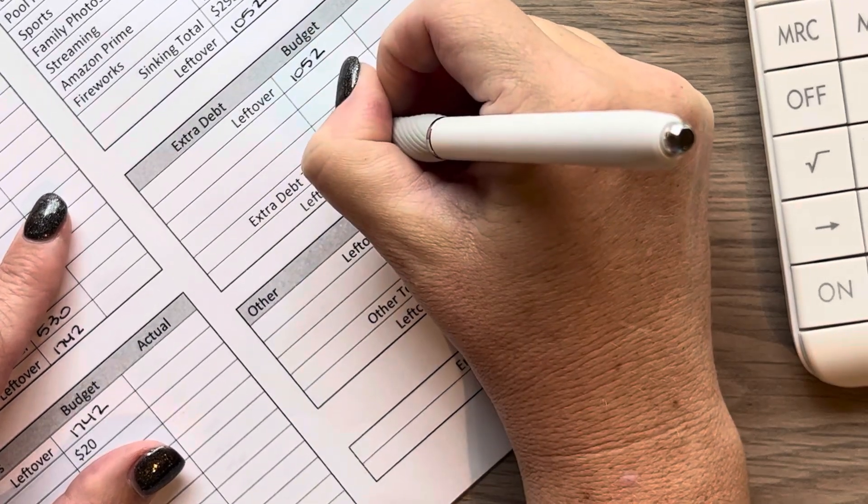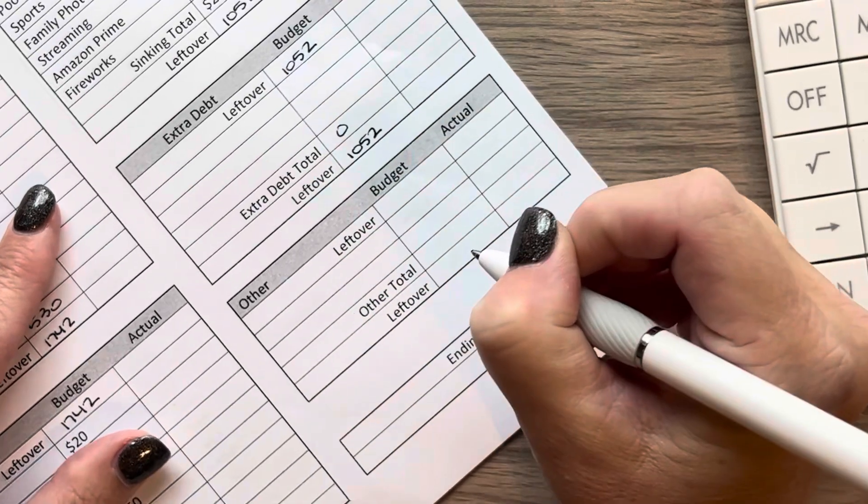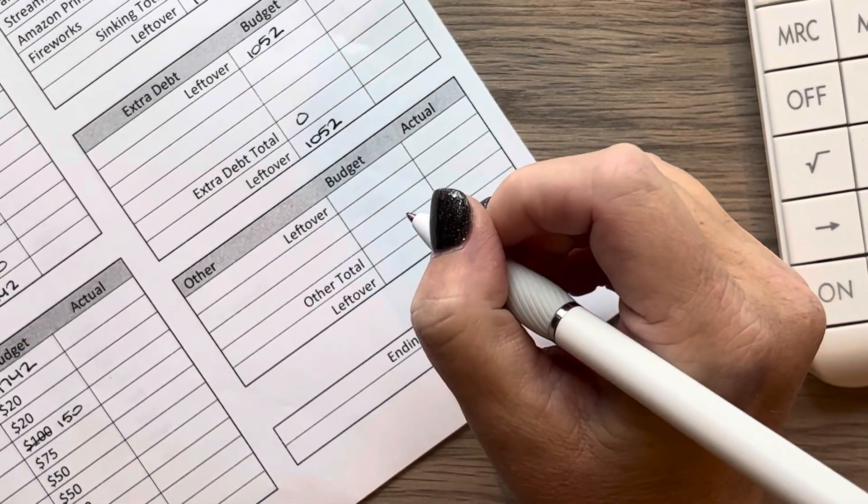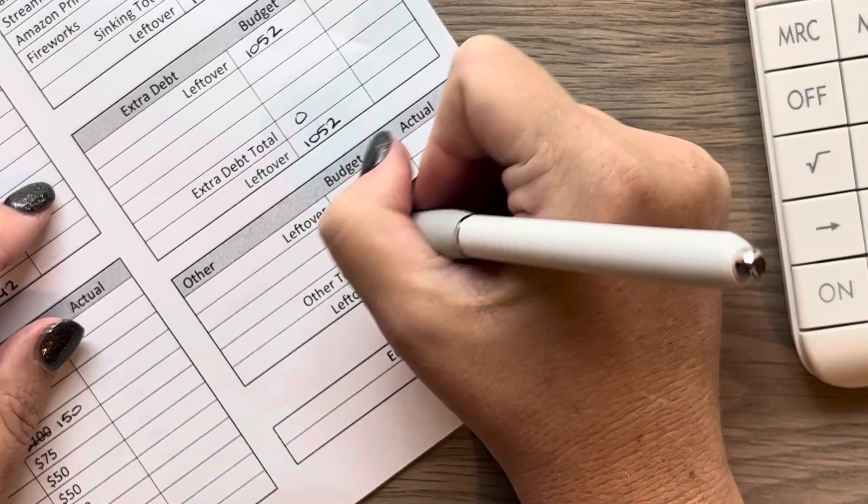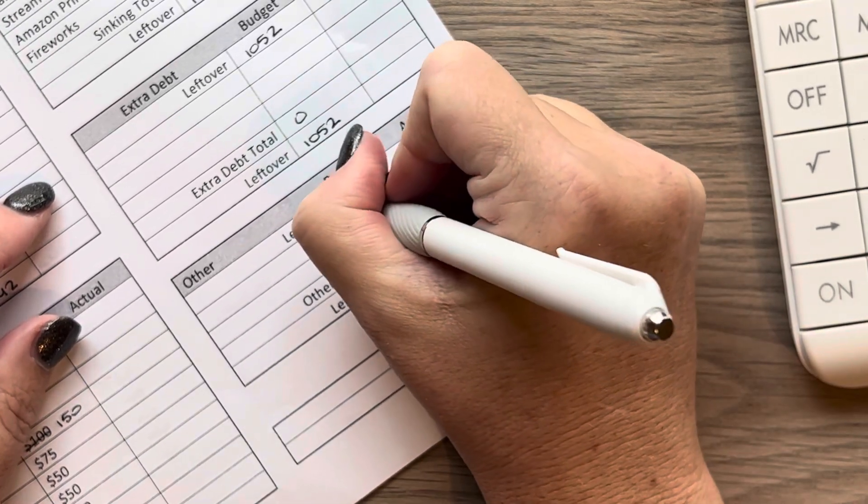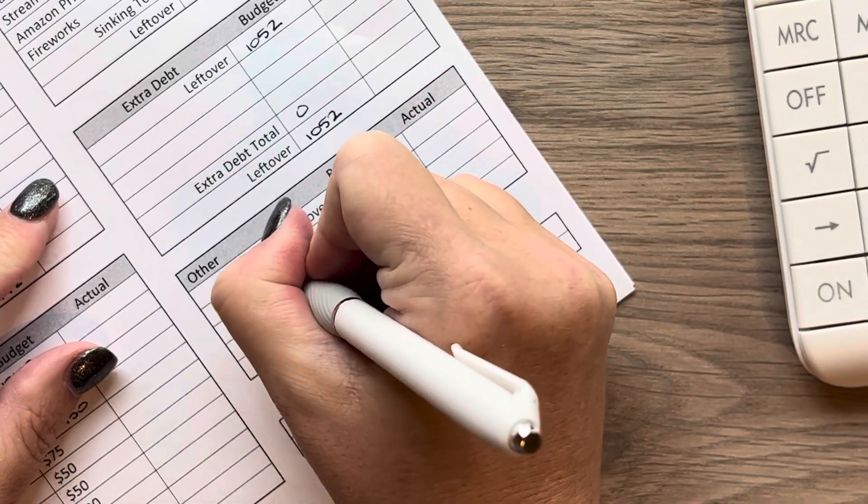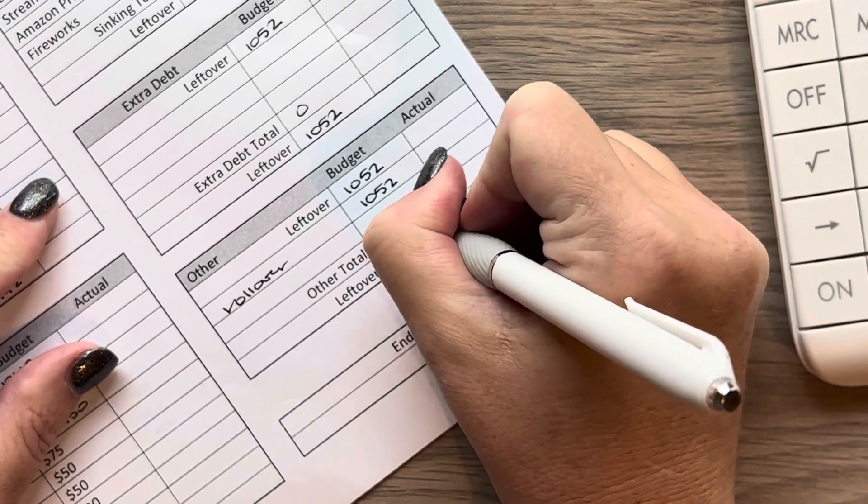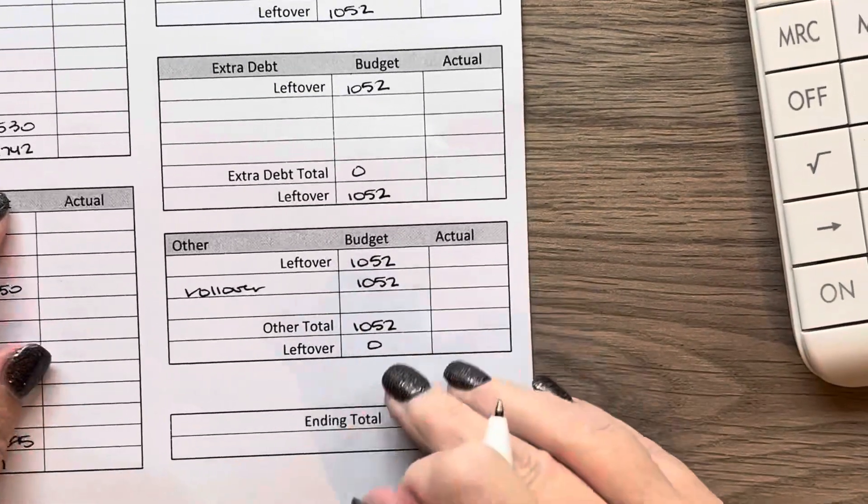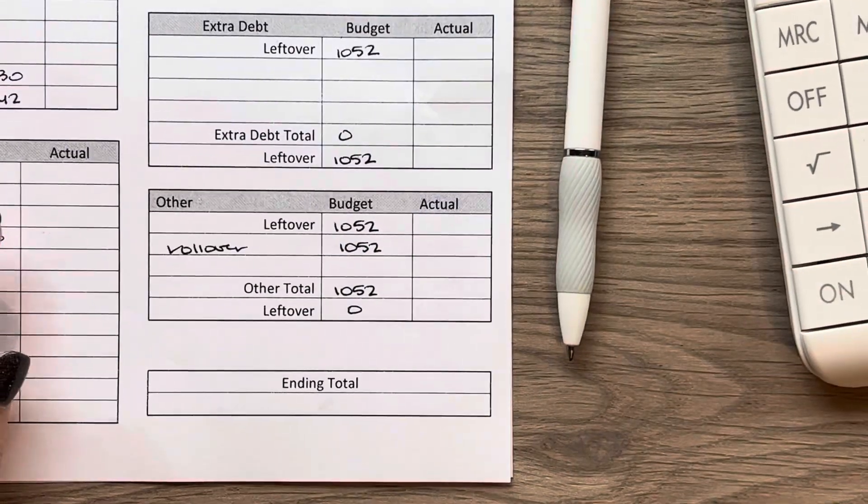We are not going to put anything towards extra debt quite yet. We are planning on putting everything, you know, as much of our extra leftover towards our snowball for the month. So we will roll over that $1052 for next week, which leaves us with a zero based budget, which is what we always enjoy. So that is that for this week.